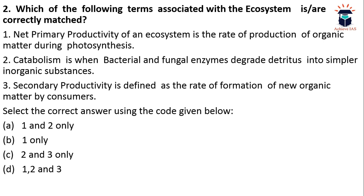The first statement is clearly wrong. The definition given is of gross primary productivity, not net primary productivity. When production takes place through photosynthesis, the organic matter produced is called gross primary productivity; when we subtract energy losses through respiration, we get net primary productivity. Statement two is correct — catabolism is a kind of destructive metabolism in which bacterial and fungal enzymes degrade detritus or dead organic matter into simpler inorganic substances for recycling. Statement three is also correct — secondary productivity is the rate of formation of new organic matter by consumers. The answer is two and three only, so the answer is C.